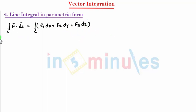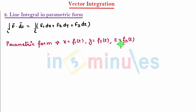What is exactly the meaning of parametric form? When you define parametric form, that means we say that x will be a function of t, y will be a function of t, and z will be a function of t. That is f₁(t), f₂(t), f₃(t).